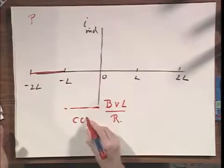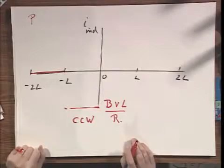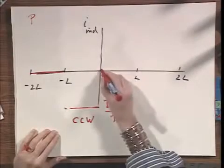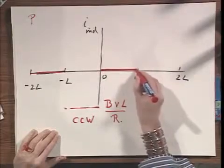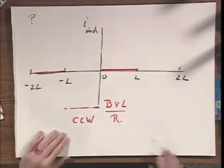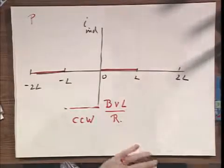And I call this negative, but it's really a counterclockwise current. And I would like to call a clockwise current positive. Then, while it's inside, all the way from 0 to L, there is again no flux change. I stress that point. Here it is again.